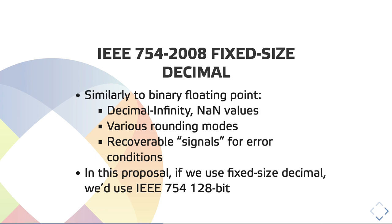What about this IEEE 754 decimal representation? They are quite similar to binary floating point numbers — there is decimal infinity, not-a-number, and various values. There are a lot of rounding modes that can happen for those numbers, and there are also non-specification signals to recover from error conditions. For example, if we try to divide by zero, this can signal the application. In this proposal, if we use a fixed-size decimal, we would use the IEEE 754 specification of 128 bits.